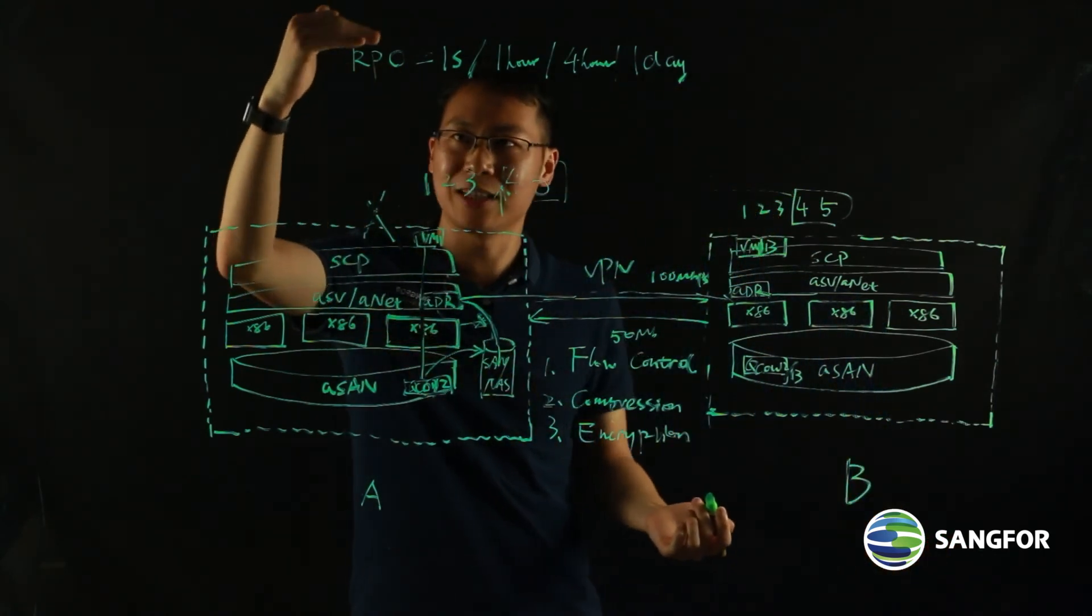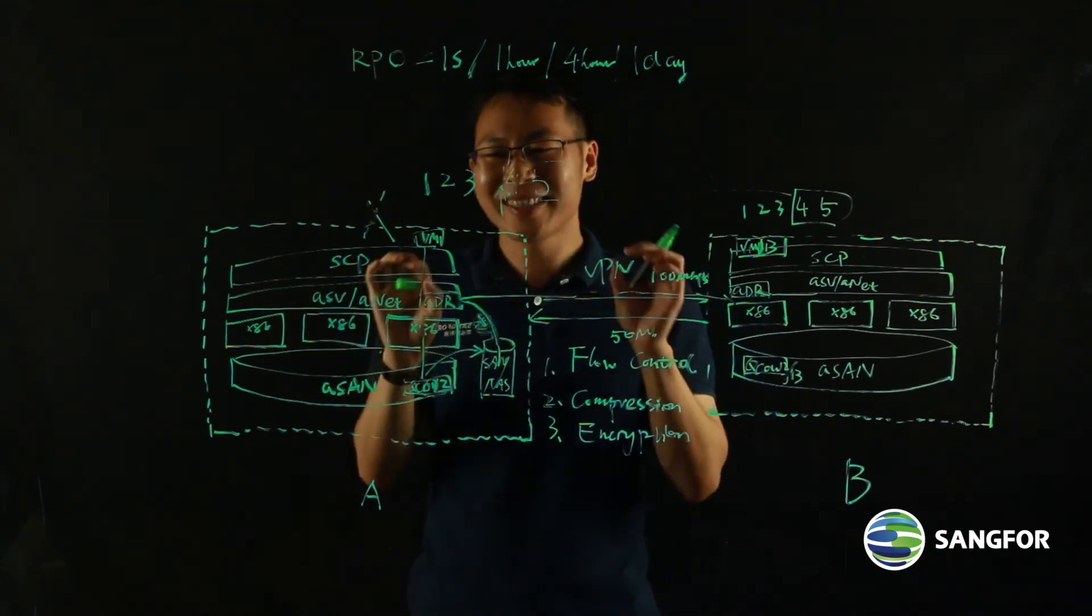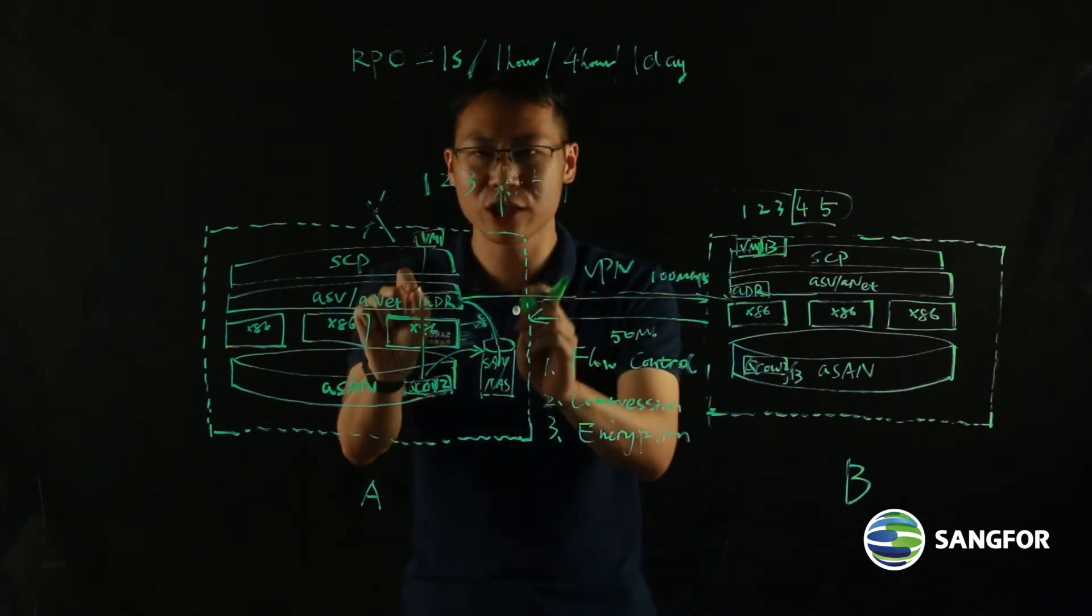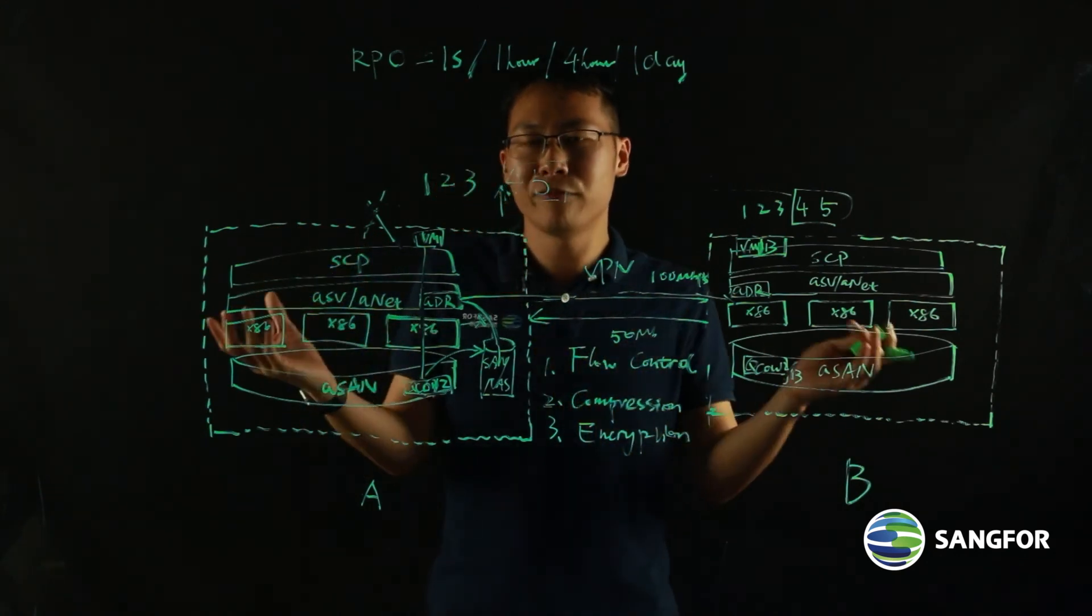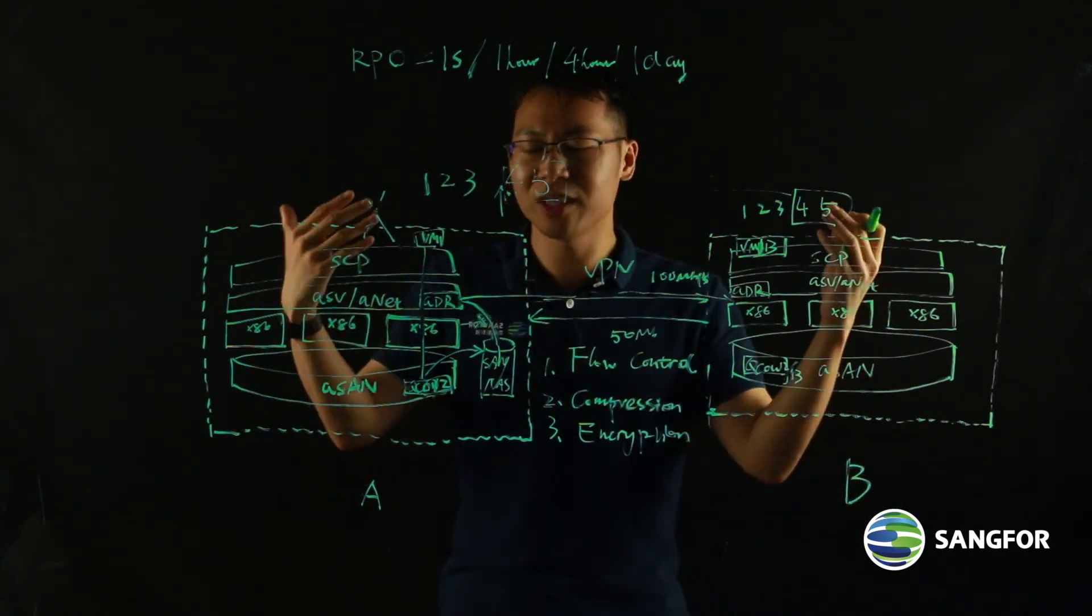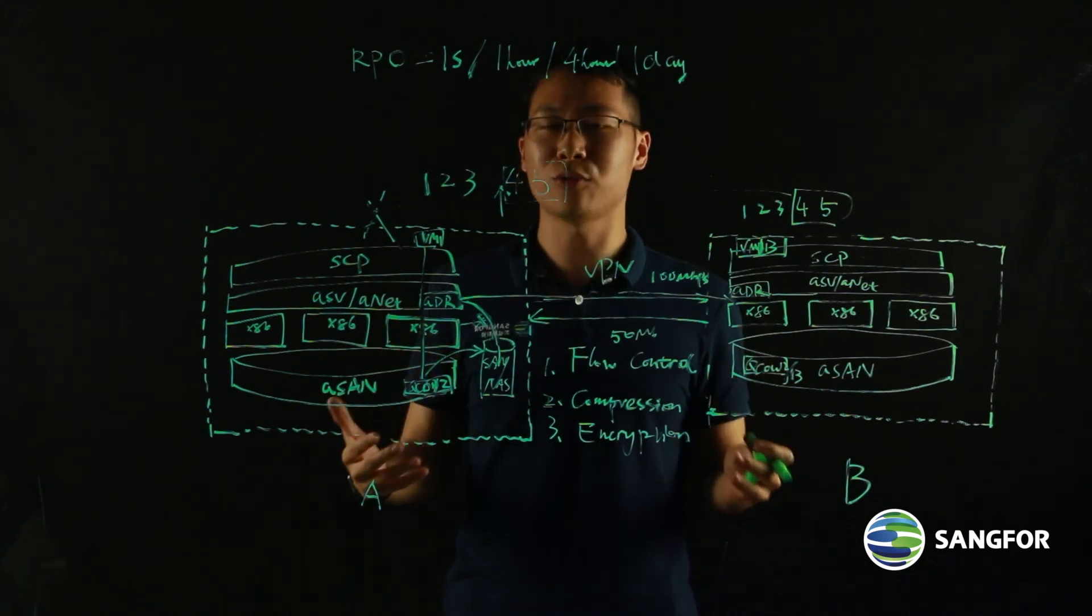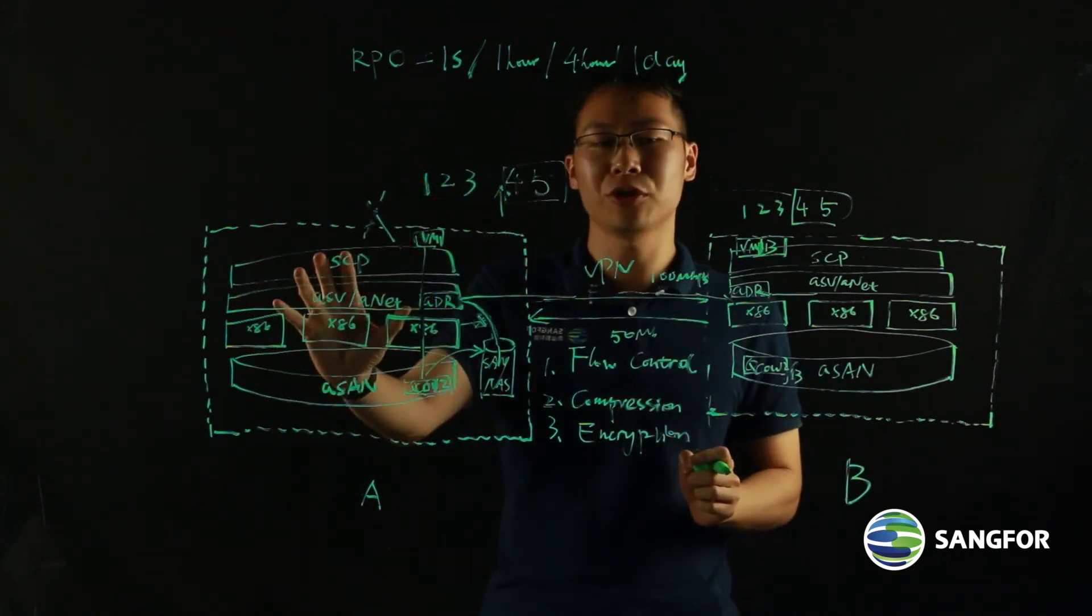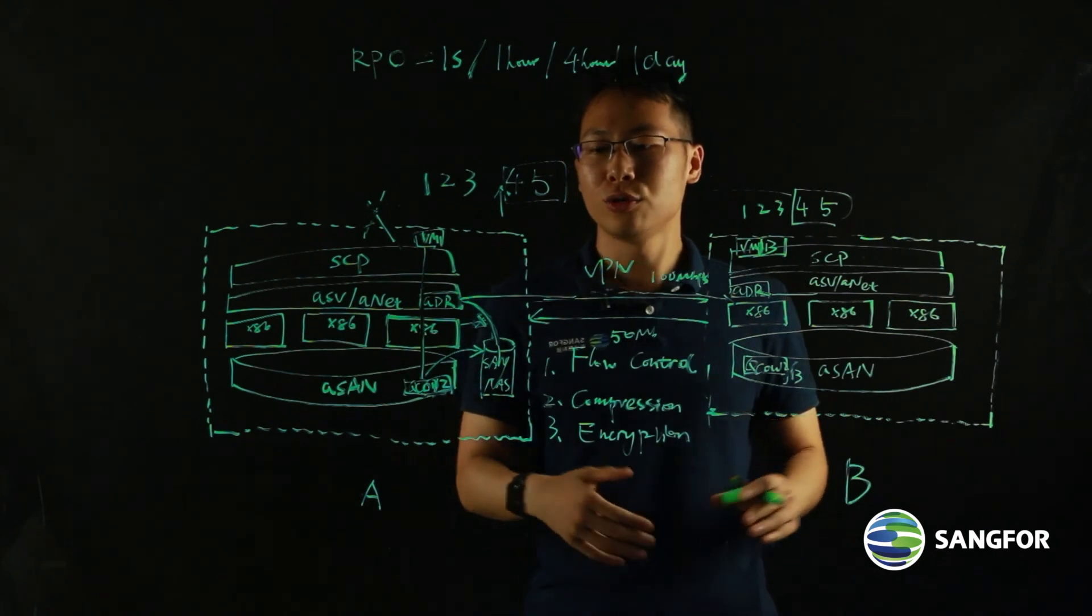We can support as minimum as one second RPO for your most mission critical applications. And also, this disaster recovery is extremely easy to use. It doesn't involve any third party components. Everything is integrated. You do not need to install anything. You just need to install the SCP from Sangfor. It's like a virtual image. You upload it to HCI and then do some simple configuration. You can have the disaster recovery management right away. And we also provide you a visualized disaster recovery monitoring with big screen displaying the traffic, the RPO compliance of your applications. So everything is done at your fingertips. It's extremely easy to operate and also easy to maintenance.